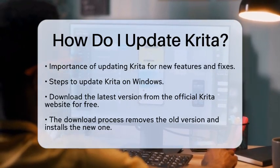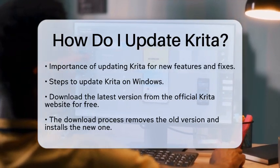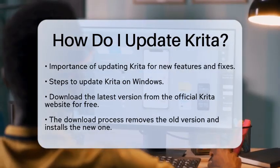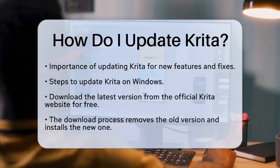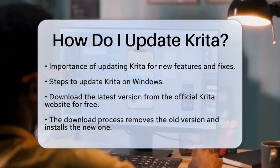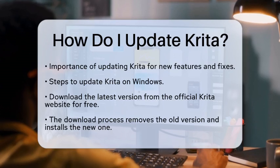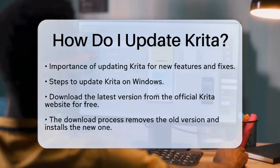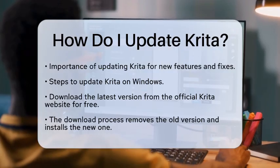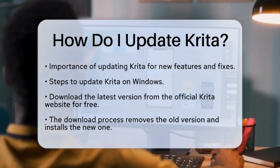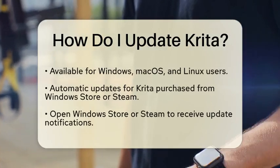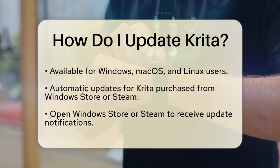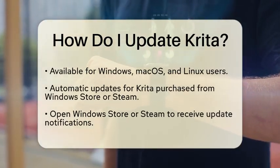The easiest way to update Krita is by downloading the latest version directly from the official Krita website. This method is completely free and works for Windows, macOS, and Linux users. When you download the new version, it will automatically remove the old version and install the latest one. Just visit the Krita website, find the Downloads section, and click on the link for Windows.